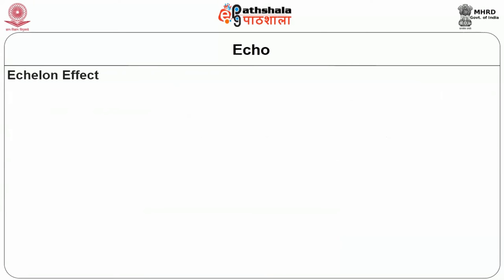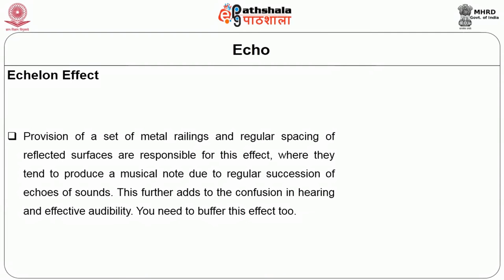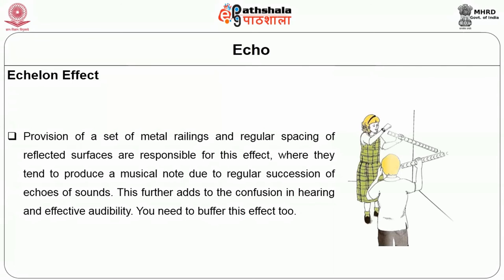Echelon effects: provision of a set of metal railings and regular spacing of reflected surfaces are responsible for this effect, where they tend to produce a musical note due to a regular succession of echoes of sounds. This further adds to confusion in hearing and effective audibility, and this effect needs to be buffered too.